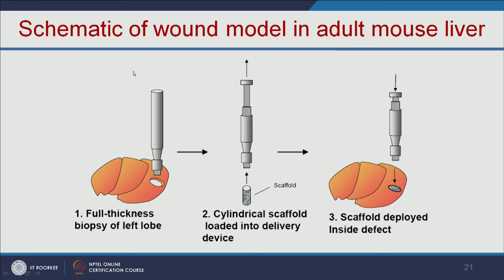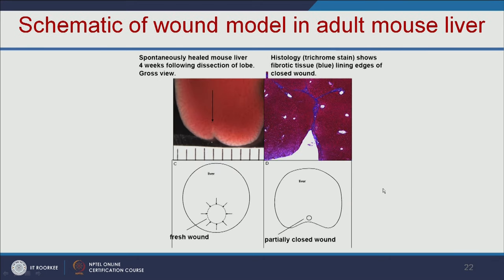Another example is a schematic of a wound model in an adult mouse liver. They make a wound on the adult mouse liver, replace it with a scaffold loaded with liver cells, and it heals the wound. Without the scaffold, there is no wound healing; with the scaffold, the wound is closed.